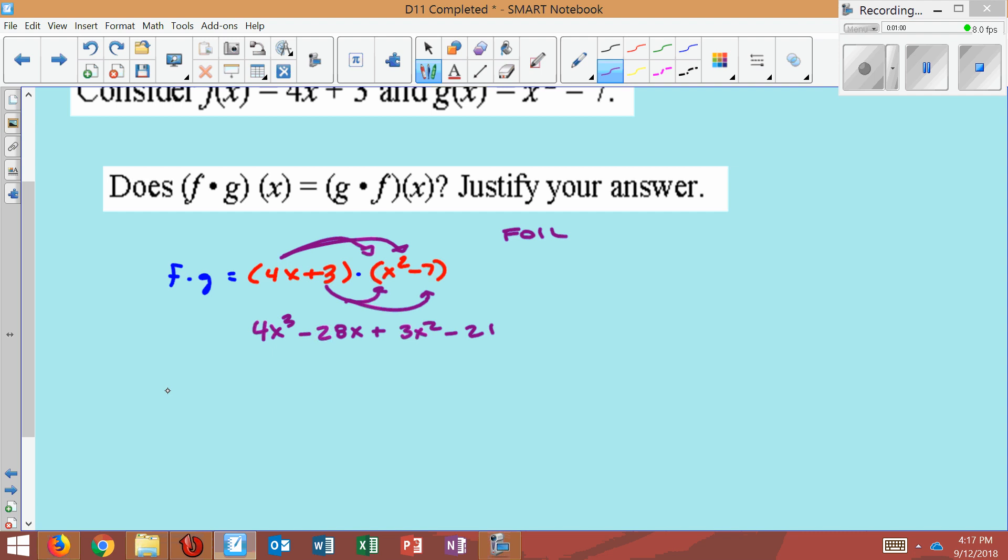And it looks like none of these terms are alike, so it would just remain as 4x cubed plus 3x squared minus 28x minus 21. Now there's f of g, or f times g, rather.